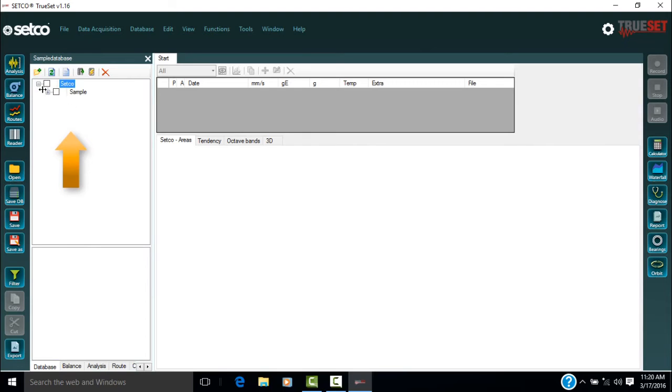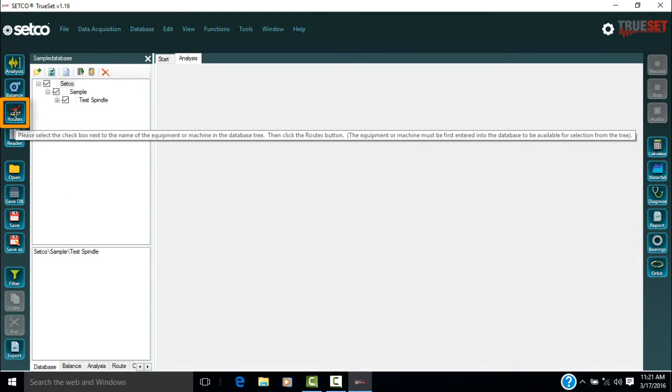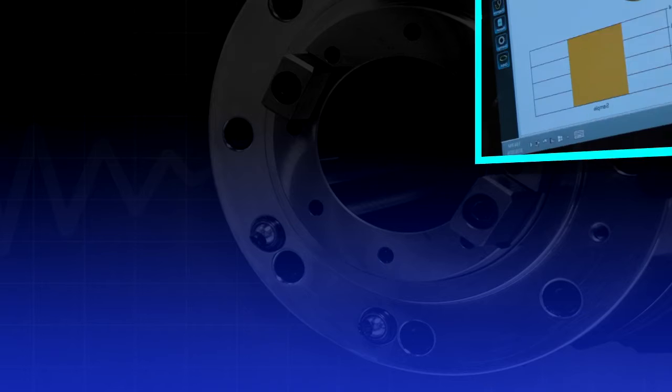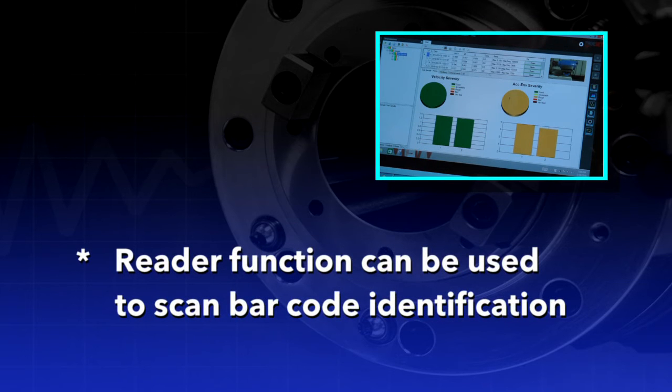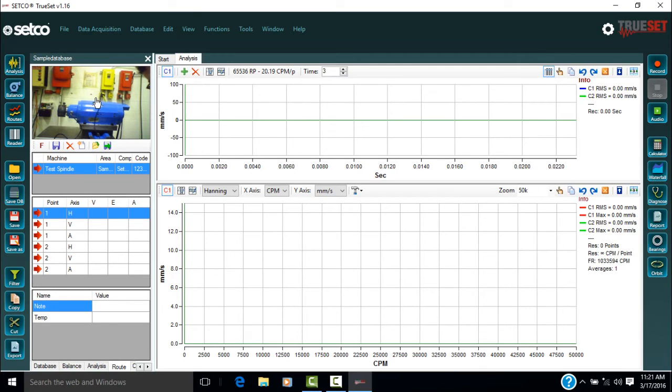When running a route, the desired equipment's checkbox must be selected from the database tree in the database window. Now click on the routes button. As an added feature, instead of manually selecting the equipment, the reader function can be used to scan the barcode attached to the equipment. Make sure the correct equipment appears.